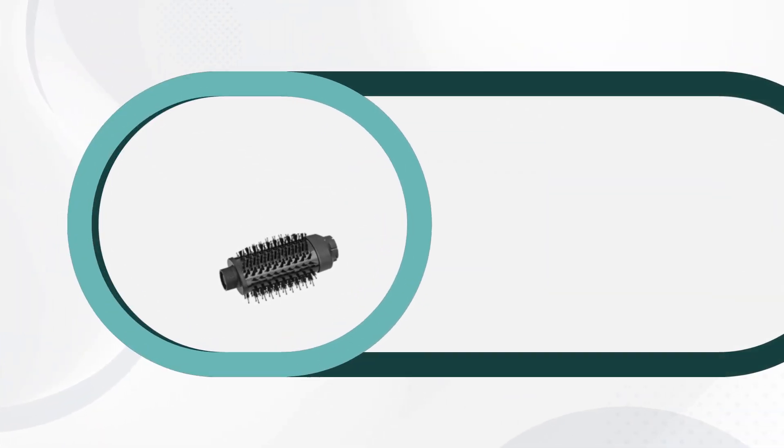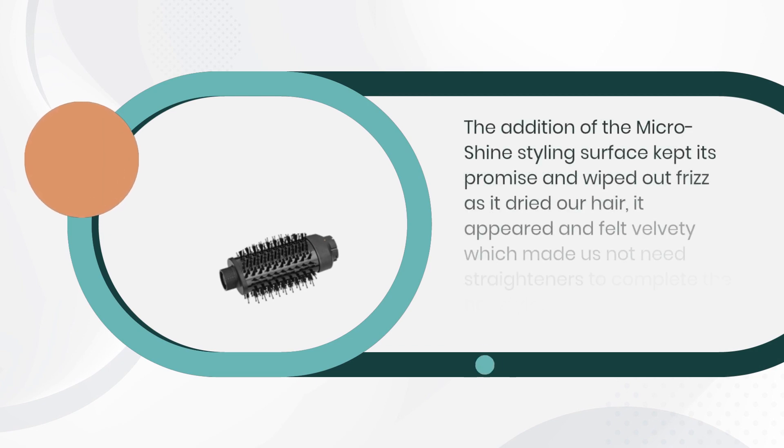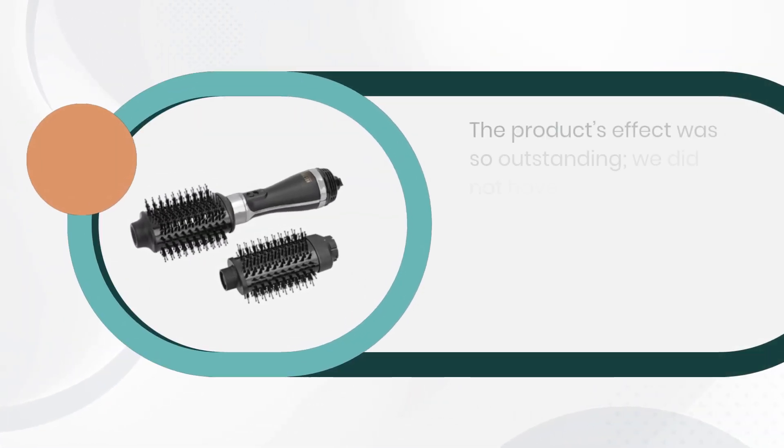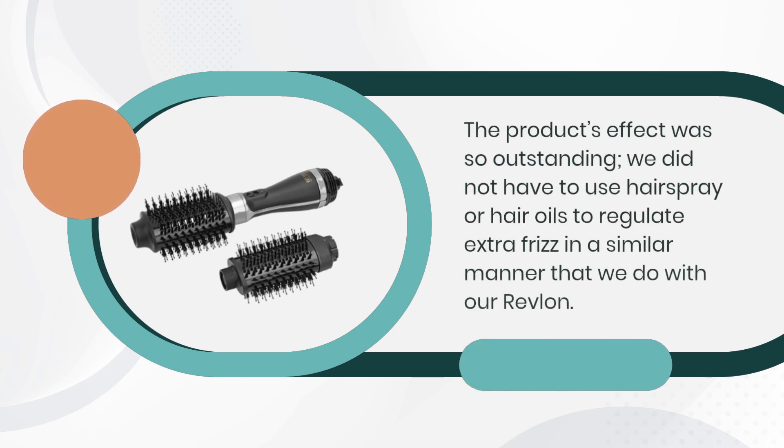The addition of the Micro Shine styling surface kept its promise and wiped out frizz as it dried our hair. It appeared and felt velvety which made us not need straighteners to complete the hairstyle. The product's effect was so outstanding, we did not have to use hairspray or hair oils to regulate extra frizz in a similar manner that we do with our Revlon.